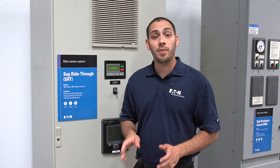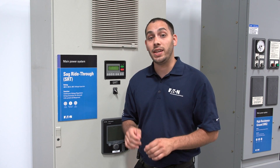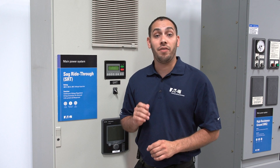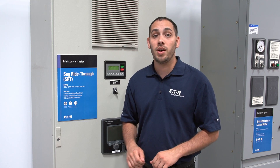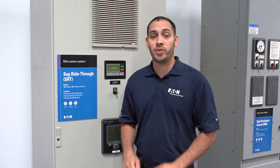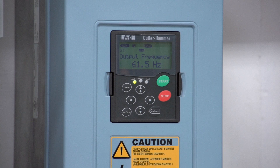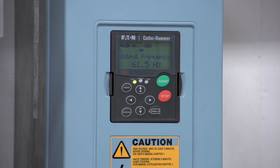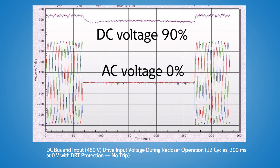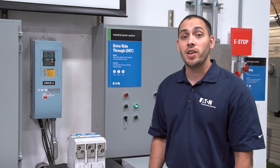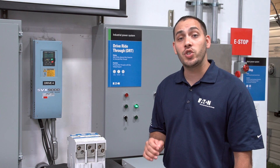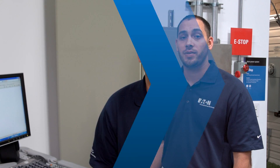However, sometimes you may only need to protect a few or a single critical load, like a variable frequency drive. A drive ride-through is used to maintain a constant DC bus voltage on a variable frequency drive during a sag event. They can also be outfitted with ultra-capacitors to ride through short-term full interruptions.